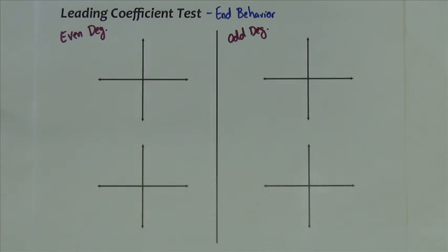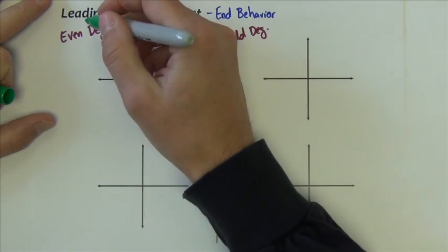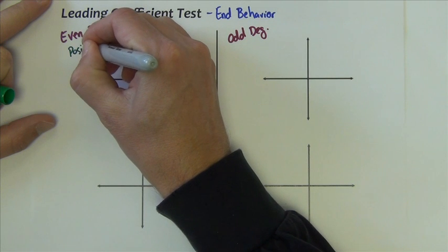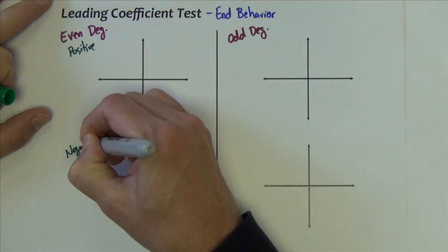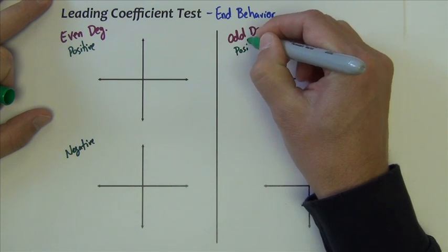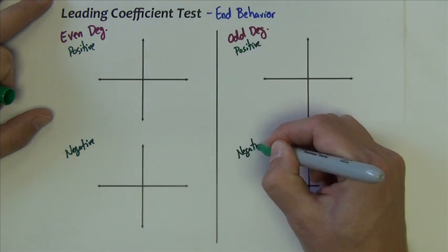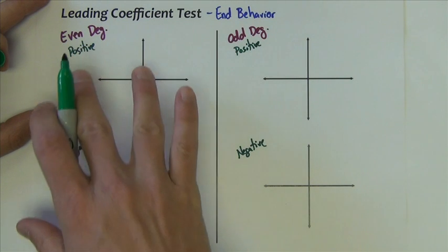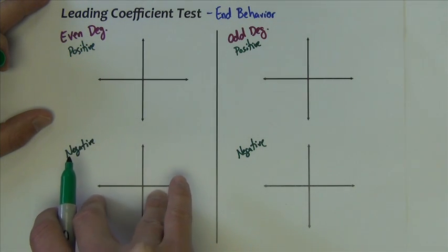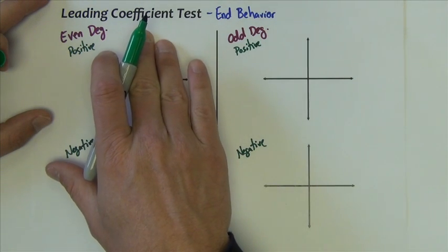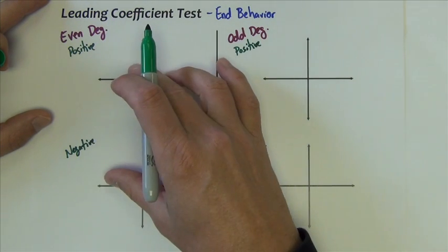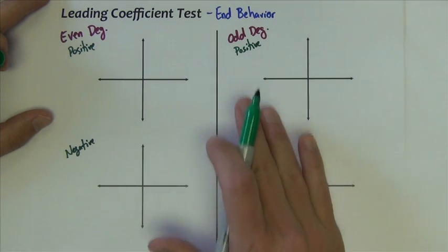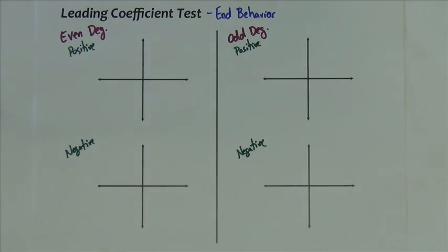For each of those two cases, the polynomial function is either going to have a leading coefficient that is positive or negative. That's all that can happen. We could have a positive x to the fourth or a negative three x to the sixth. The number in front of the highest power term — the coefficient — is always going to be positive or negative. So even or odd, positive or negative, leads us to four possible outcomes and nothing else.